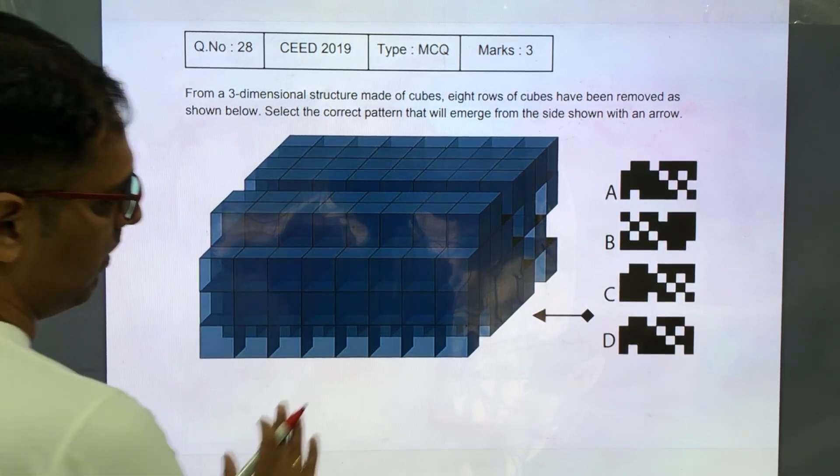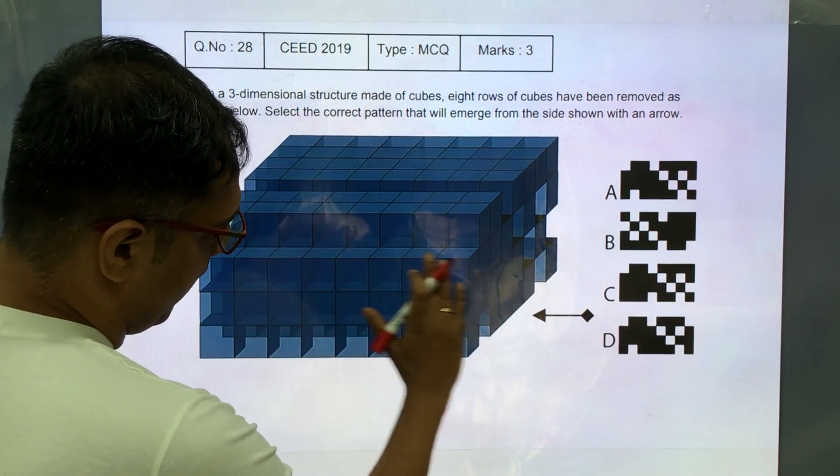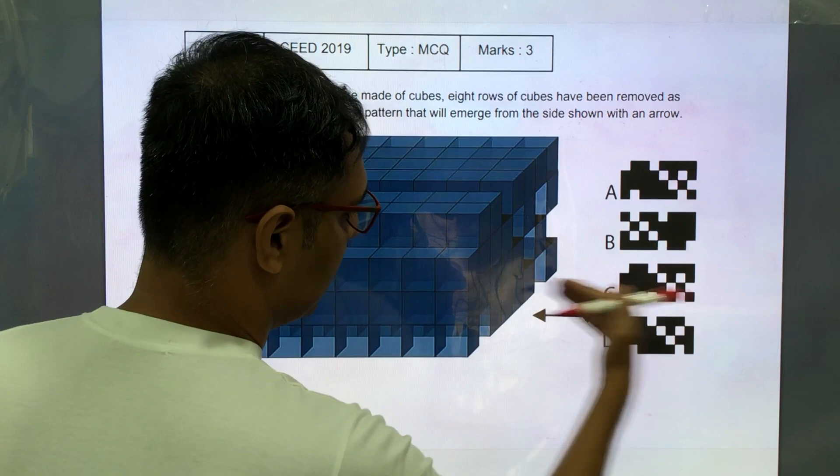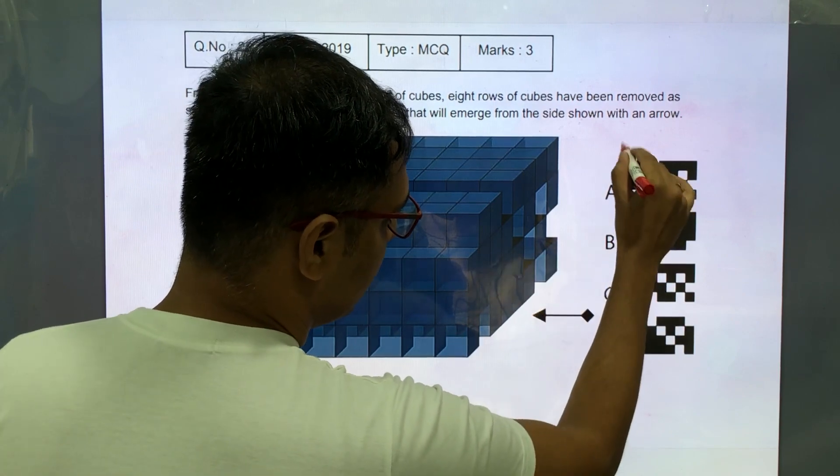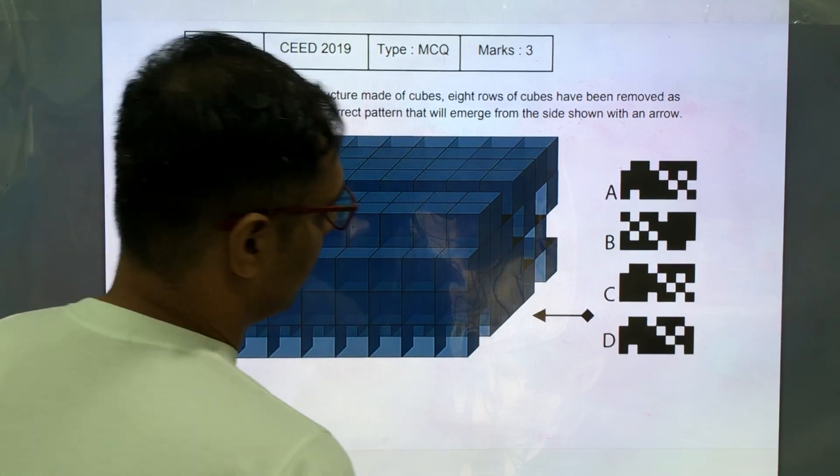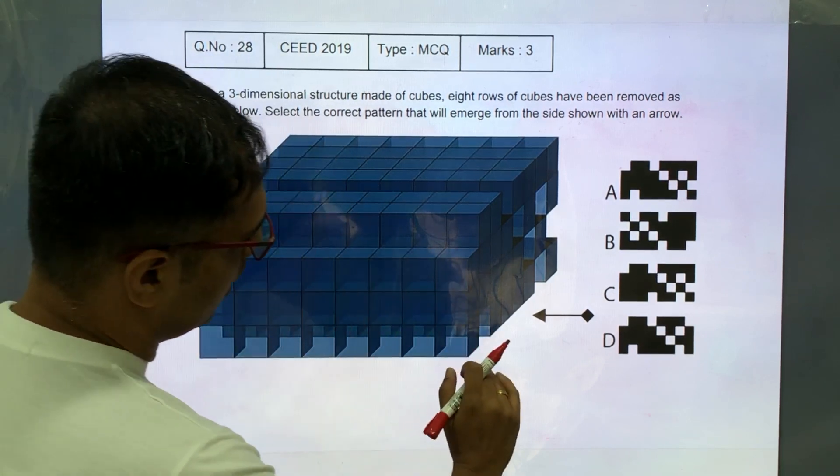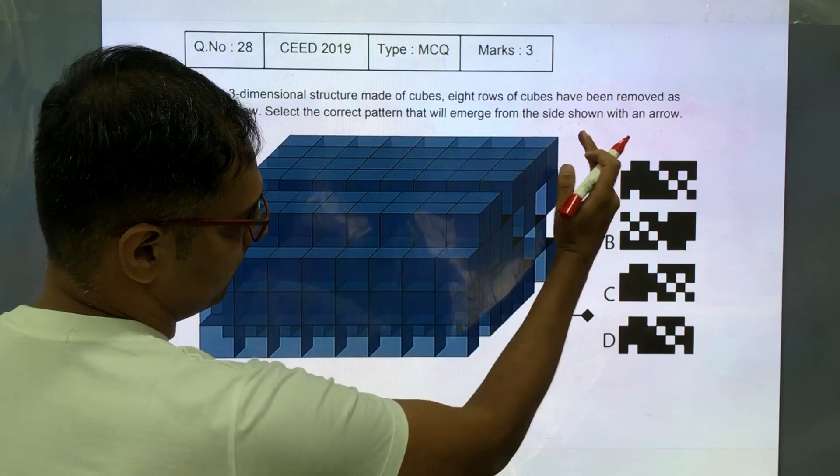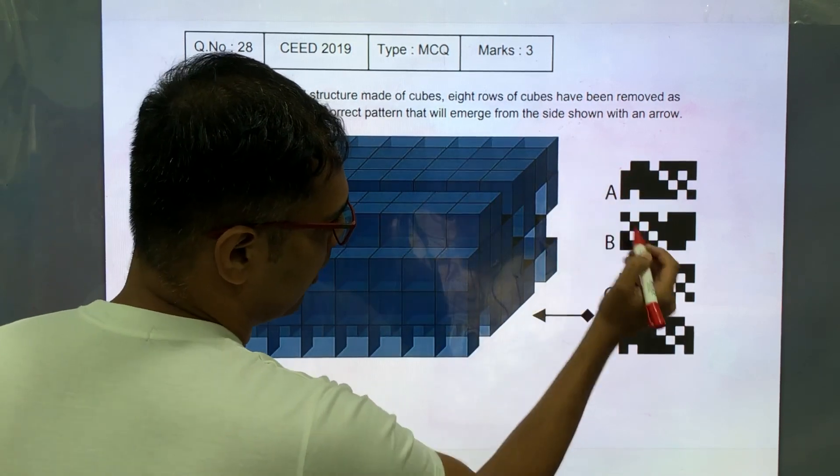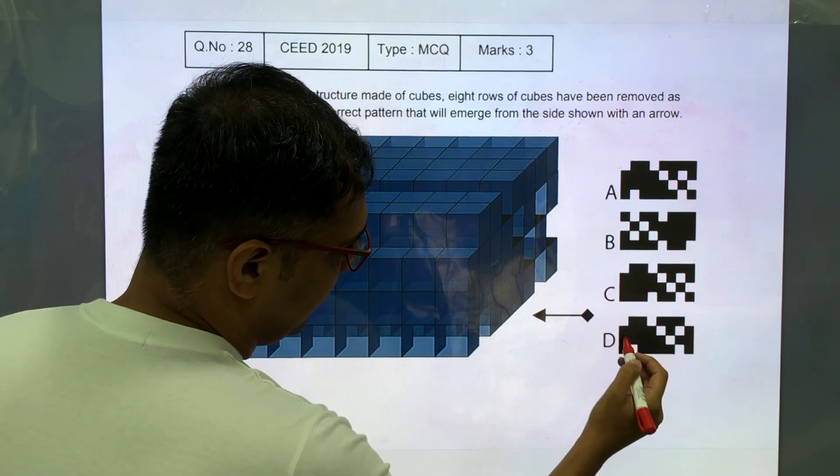So let's start from the first phase which will be seen here when seen from the right hand side, this first column and let's compare. So it's actually a height of 4, the first row has been removed so there will be a gap here which is seen in A, C and D.